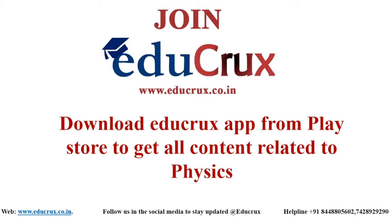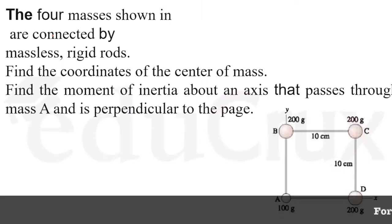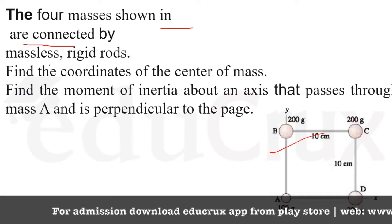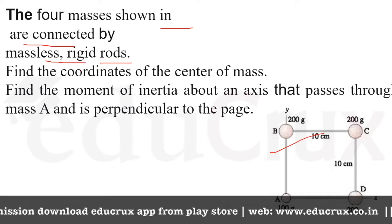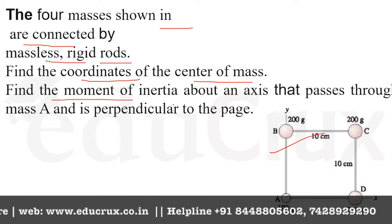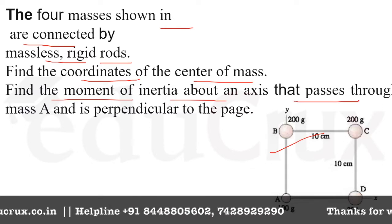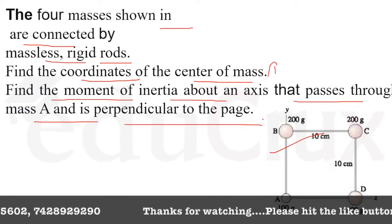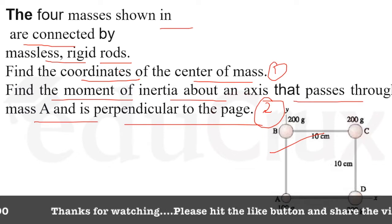Hello everyone, my name is Aloni and today we will discuss a question that will be helpful for all physics competitive exams. Our question says there are four particles shown in a figure, connected by massless rigid rods. Find the coordinates of the center of mass, and find the moment of inertia about an axis that passes through mass A and is perpendicular to the page.